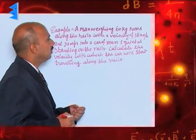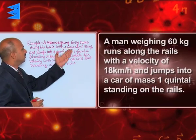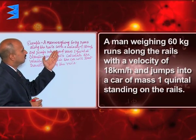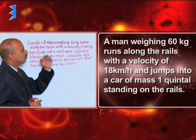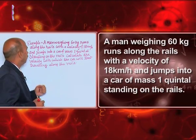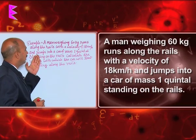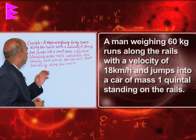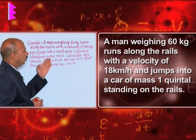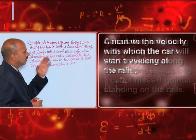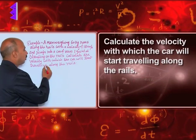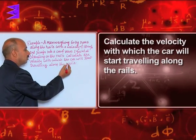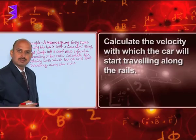See in this example: a man weighing 60 kg runs along the rails with a velocity of 18 kilometers per hour and jumps into a car of mass 1 quintal standing on the rails. Calculate the velocity with which the car will start travelling along the rails.